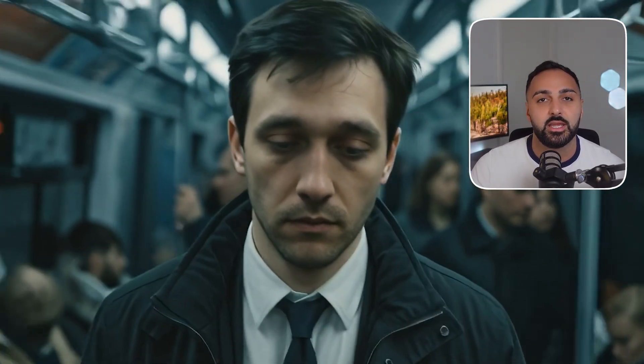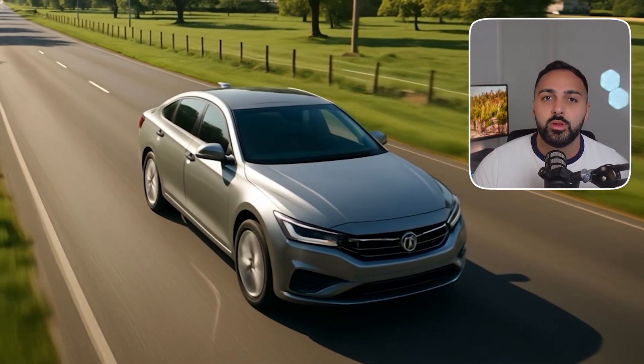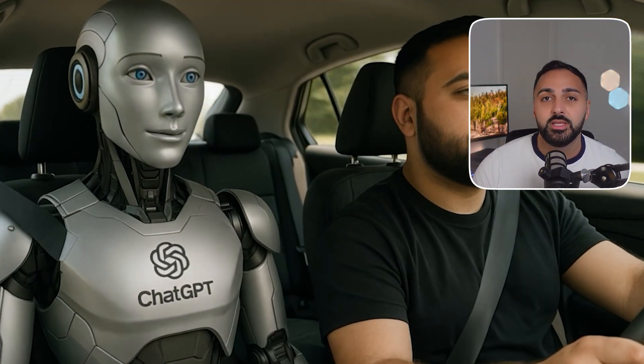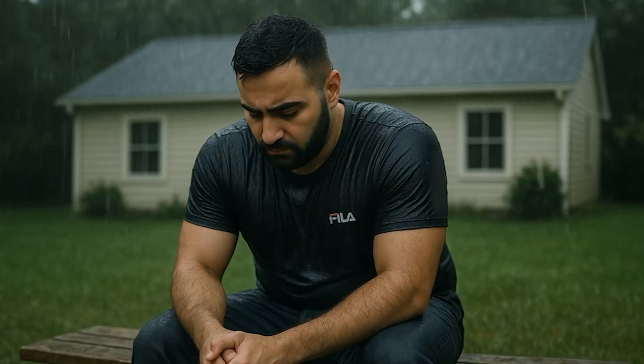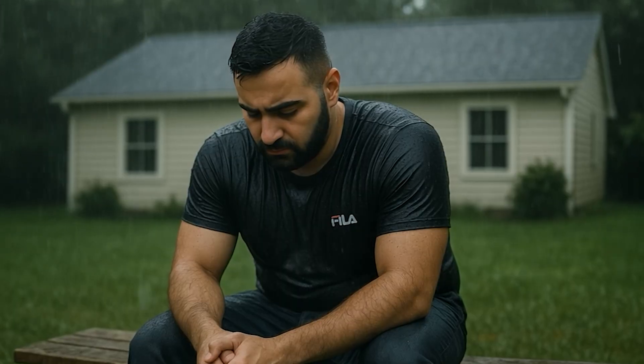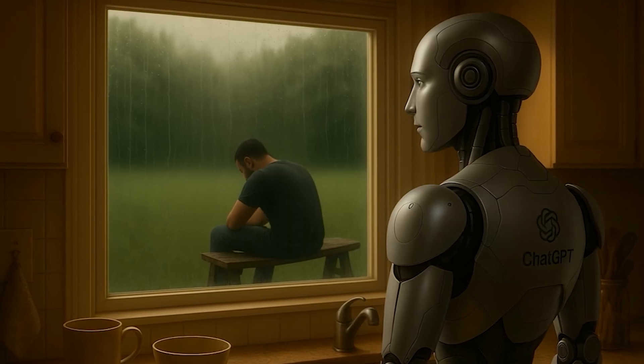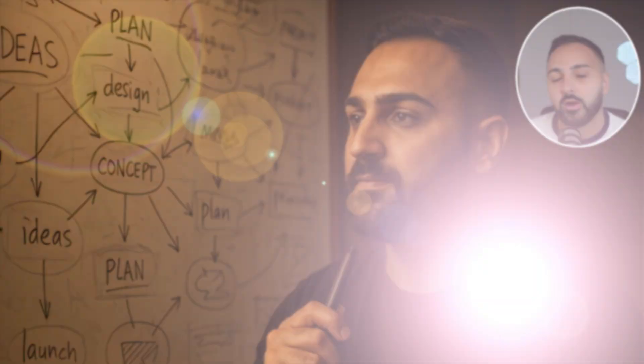So everything you just heard and watched in that AI short film was generated using a bunch of AI tools. Recently I did a tutorial showcasing how to create consistent character story videos, but I wanted to do another one because since then I've actually improved my workflow to get more consistent results. I'm going to show you my exact workflow that I used to create that video, and after you finish watching, you will have, in my opinion, one of the best workflows to create high quality story videos with consistent talking characters.